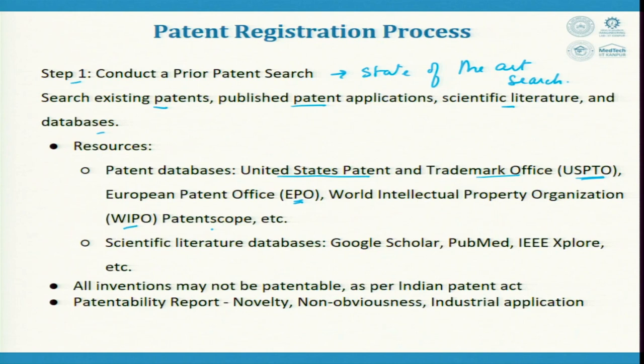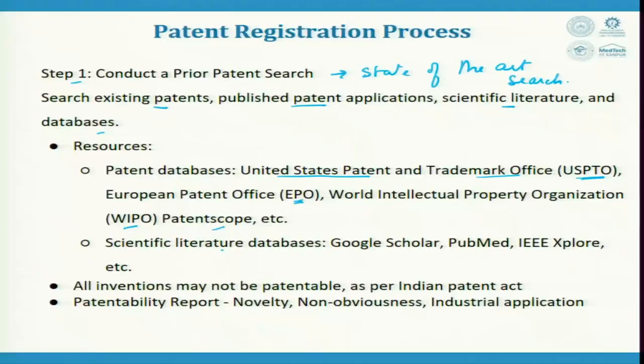You can search in public domain search engines, or you can pay a service search engine — they charge per search, ranging from one dollar to a thousand dollars — and they do a thorough job. For scientific literature, databases such as PubMed, IEEE Xplore, and Google Scholar are available.